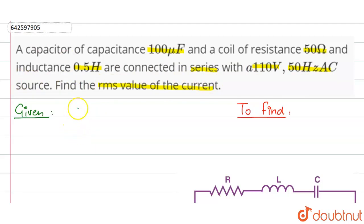Given the capacitor of capacitance 100 microfarad, we are given the resistance of the resistor as 50 ohms and the inductance of the inductor as 0.5 henry. We are also given the source has the RMS value of potential as 110 volts and the frequency is given as 50 hertz. In the question we need to find the RMS value of the current, so we need to find I_RMS.